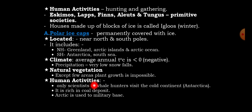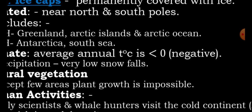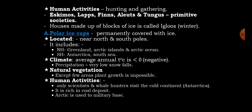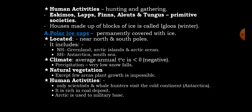Human activities in the polar ice cap are limited — only scientists and whale hunters visit the cold continent of Antarctica. The Arctic is also used as a military base. In summary, the polar zone is classified into two regions: tundra and polar ice cap. That is all about today's lesson. Thank you for your listening and attention.